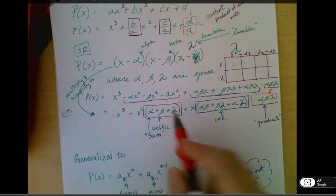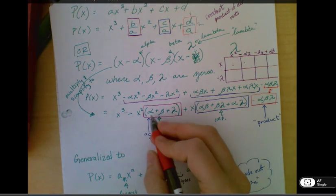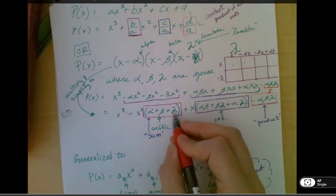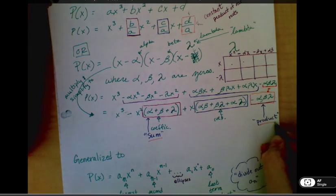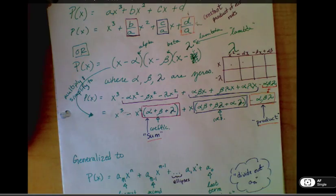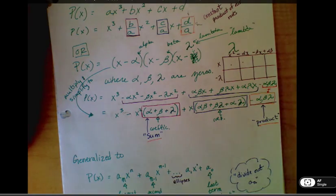Three multiplied together. So in this case right here, my sum, you can see, is alpha, beta, lambda. And there's our product. So those are the two things we were looking for, which were the sum and the product of the roots.